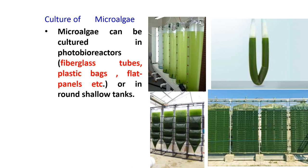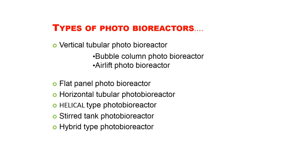There are different types of photobioreactors. One is the vertical tubular photobioreactor, which is further divided into the bubble column photobioreactor and the airlift photobioreactor. Another is the flat panel photobioreactor, the third is the horizontal tubular photobioreactor, and the fourth is the helical type photobioreactor.